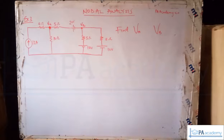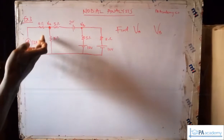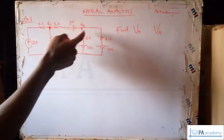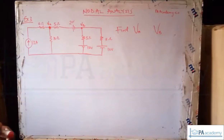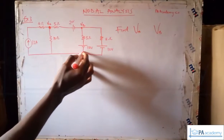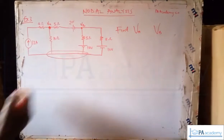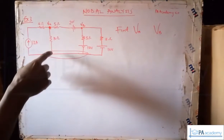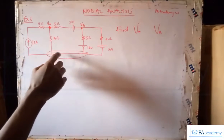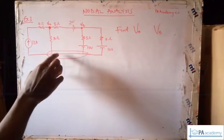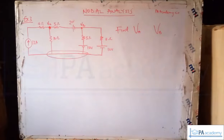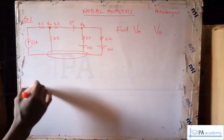Once you have done that, you pick one as your reference node. How many nodes do we have? The question tells us to look for the voltage at this node and this node, so that means this is a node and this is a node. Another node we have here is a combination — this is a node because it is a point of intersection connecting multiple elements.